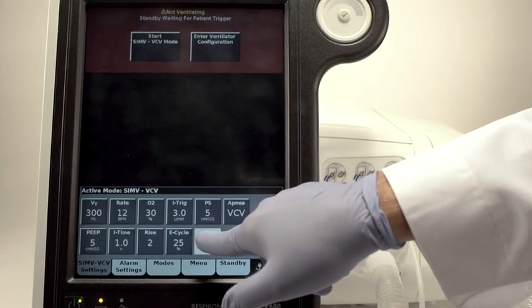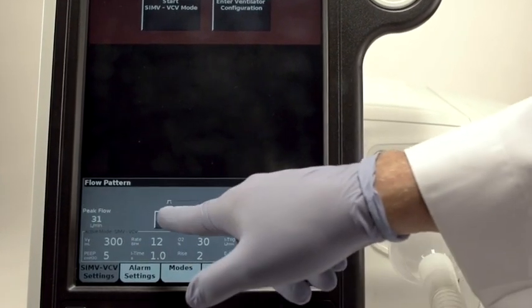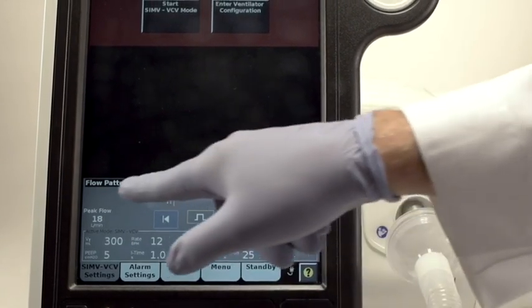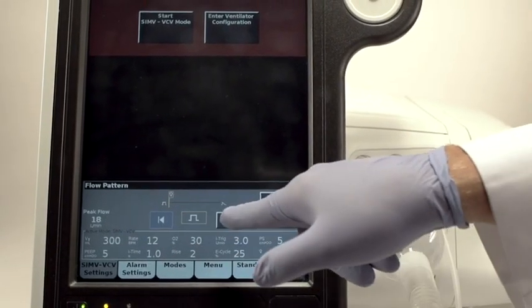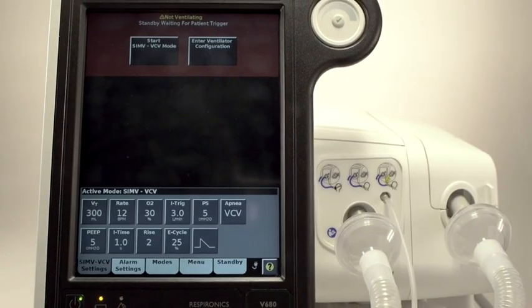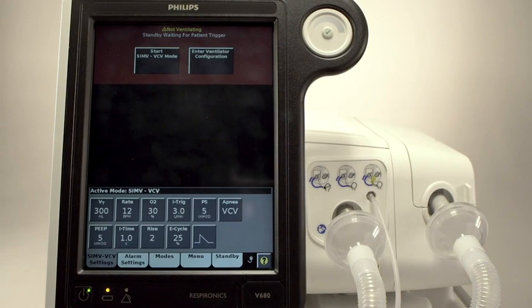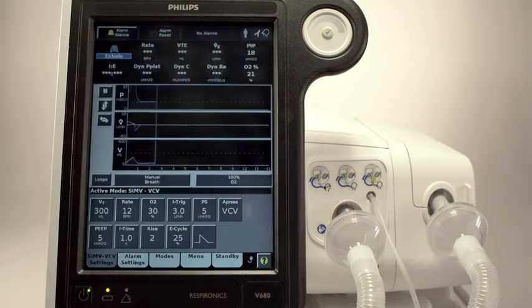The choice of flow delivery pattern will also affect the delivered peak flow. Note how the calculation changes as you change the pattern from square to ramp. Once you are satisfied with all of your settings, touch Accept. Connect your patient who was intubated while you switched to invasive ventilation and ventilation commences automatically.